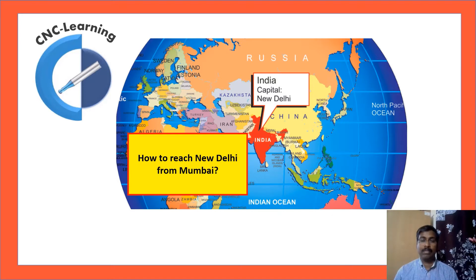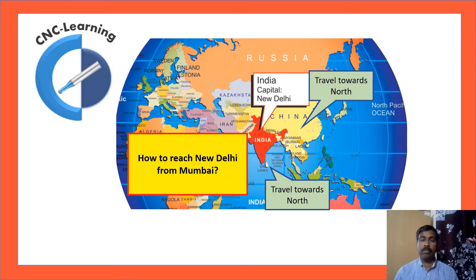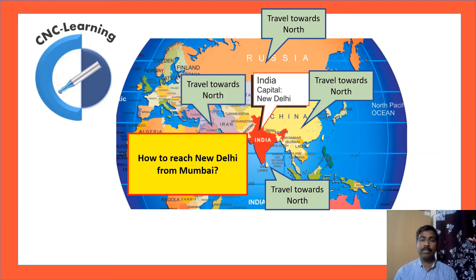Now, with a minor modification, the same question is repeated. How to reach New Delhi from Mumbai? So, a person in Sri Lanka is answering travel towards north. Now, the same question is repeated in China. But the answer is same. Travel towards north. Because the question is how to reach New Delhi from Mumbai? Mumbai, the reference is fixed. So, the answer is also fixed.